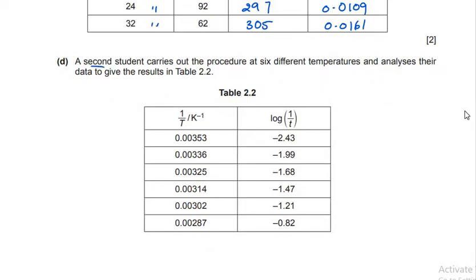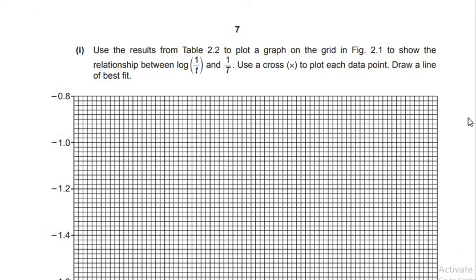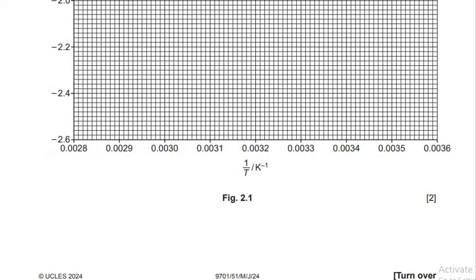The next part: a second student carries out the procedure at six different temperatures and their results are given in table 2.2, where 1/t and log(1/t) values are listed. We are asked to use these results to plot a graph on the grid in figure 2.1, showing the relationship between log(1/t) and 1/T (temperature). Use a cross to plot each data point and draw a line of best fit. On the y-axis is log(1/t) and on the x-axis is 1/T in per Kelvin.